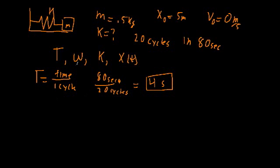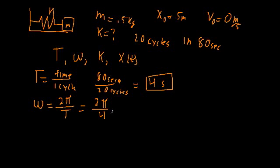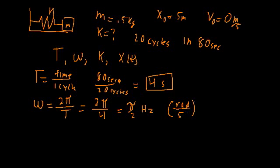Now that we know the period, let's find the angular frequency. Omega equals 2π divided by the period, so we get 2π divided by 4 seconds, giving an angular frequency of π over 2, in units of 1 over second — or π/2 hertz. You can also express this as π/2 radians per second; radians is dimensionless but helps keep track of what we're dealing with.